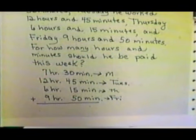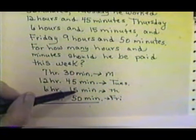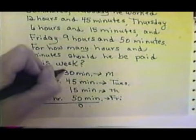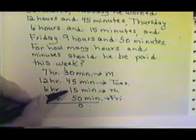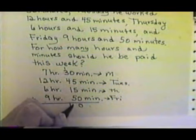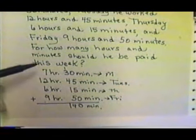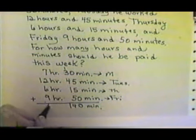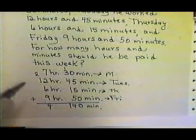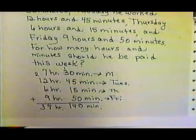He didn't work on Saturday and Sunday. So if we add up our minutes, we have 5 and 5 is 10. So we put down our 0, carry our 1. 1 and 3 is 4, and 4 is 8, and 1 is 9 and 5 is 14. So he worked 140 minutes. And if we add up our hours, 7 and 2 is 9 and 6 is 15, and 9 is 24. Carry our 2. 2 and 1 gives us 3. So he worked 34 hours and 140 minutes.